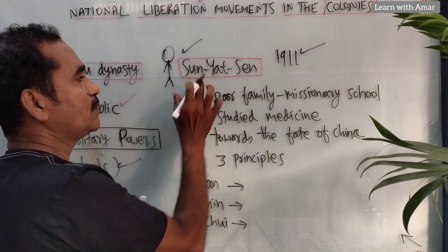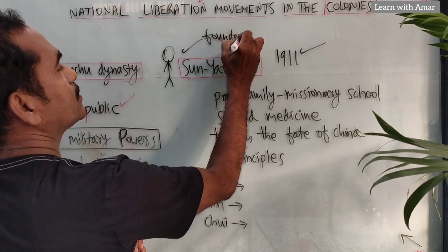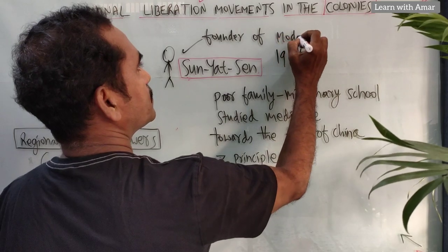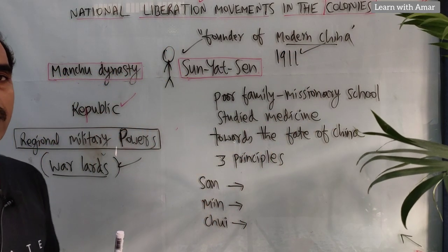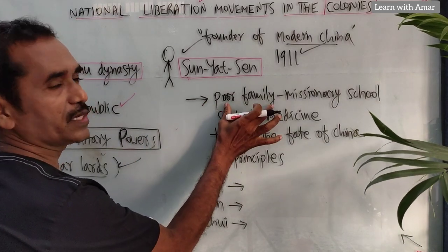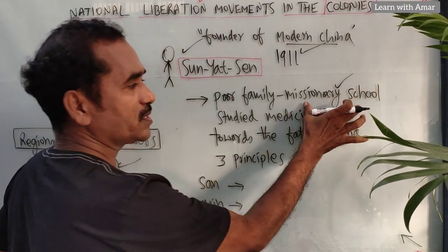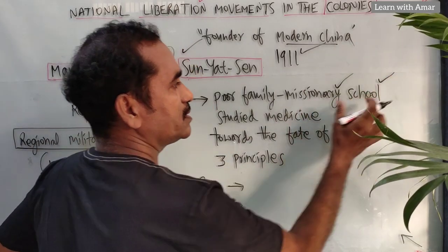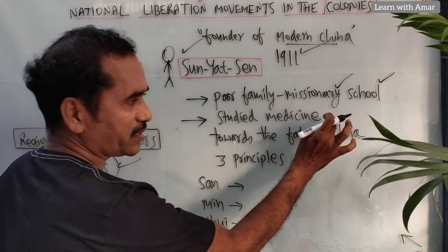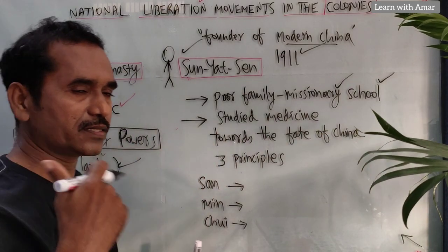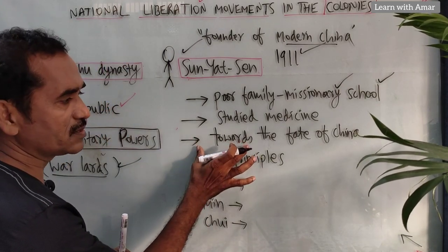Now let's see about Sun Yat-sen. He was called the founder of modern China. He wanted to develop his country, China. He came from a poor family and completed his education in missionary schools, where he was introduced to democracy and Christianity. He studied medicine but did not practice it. He was greatly concerned about the fate of China.